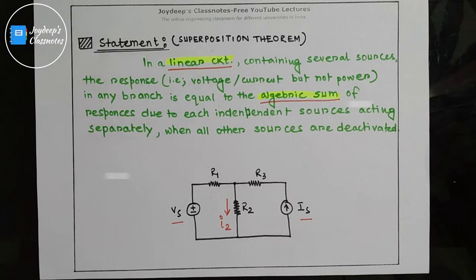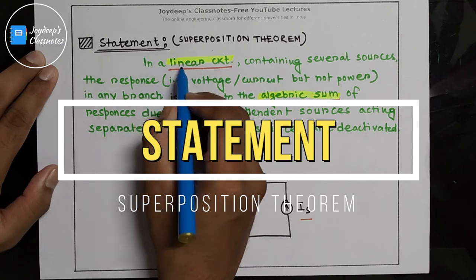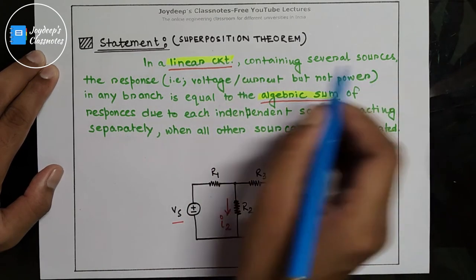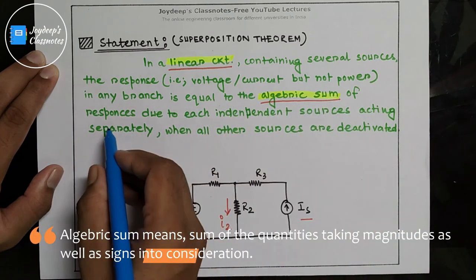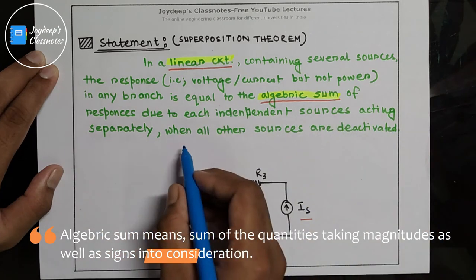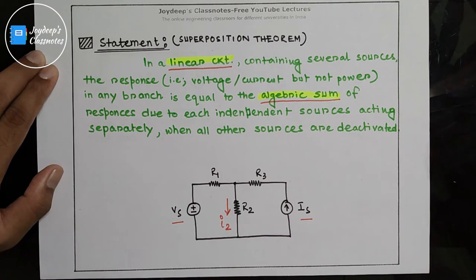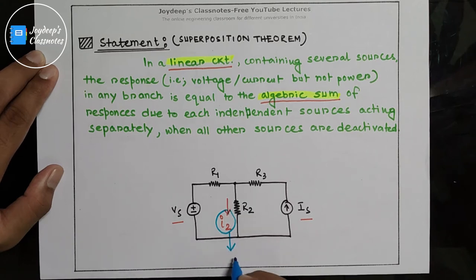So now it is the time to understand the statement of the superposition theorem. The statement is: in a linear circuit containing several sources, the response in any branch is equal to the algebraic sum of the responses due to each independent source acting separately, when all of the other sources are deactivated. What does that mean? Let's say you have this circuit and you want to find out this branch current, that is I2. That becomes your output response for this circuit.